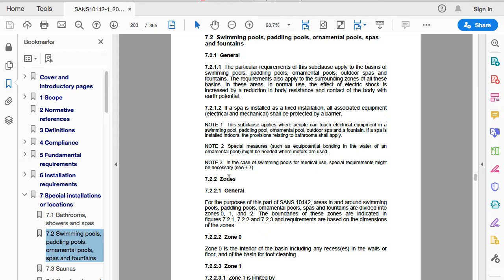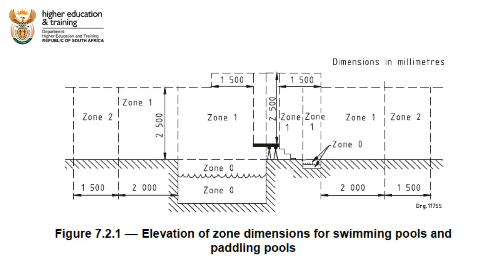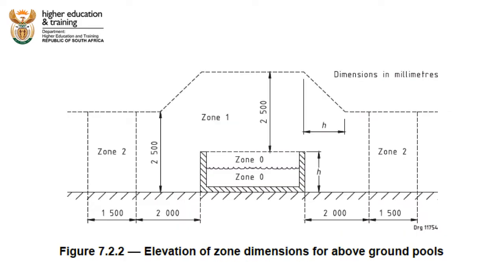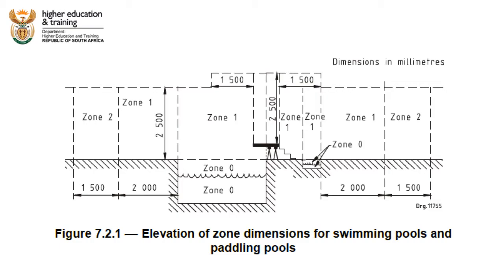Clause 7.2.2 explains that there are three zones around pools — namely zone 0, 1 and 2 — and these are illustrated in figures 7.2.1, 7.2.2 and 7.2.3. Figure 7.2.1 shows us the zones of an ordinary swimming pool sunk into the ground, and 7.2.2 shows the zones around a pool or body of water above the ground. For the rest of this exercise let's assume we're dealing with an ordinary swimming pool sunk into the ground and that we are going to be installing a pool pump about three meters away from the pool — in other words, in zone 2.